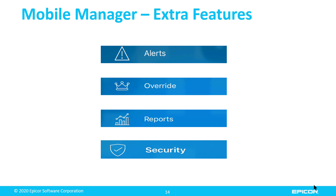Alerts are pushed to you based on your alert profile — whatever alerts you set up for yourself can be pushed to the phone. For manager overrides, if an override has been set up on your system and you need to confirm something, you can do that from your phone or tablet instead of from a PC, saving you time — even if you're not at the store.